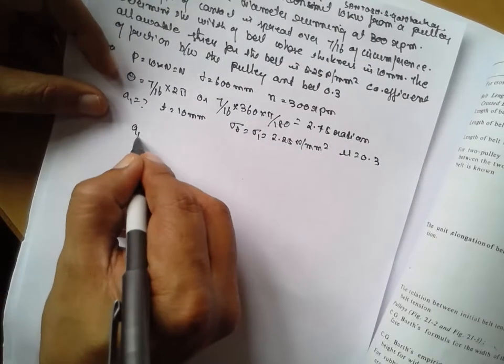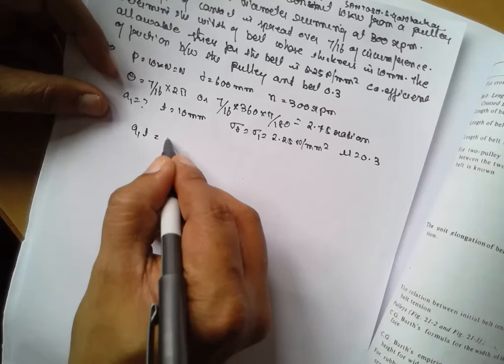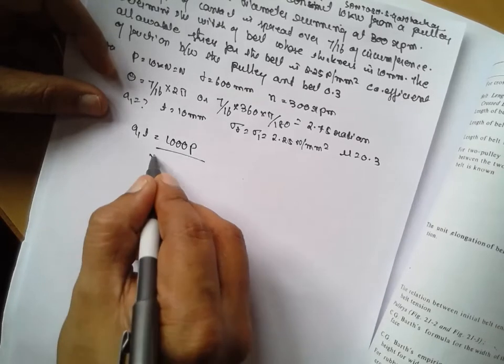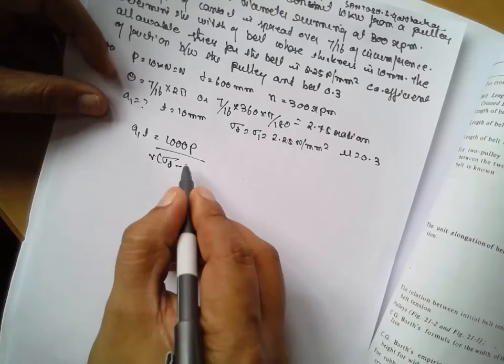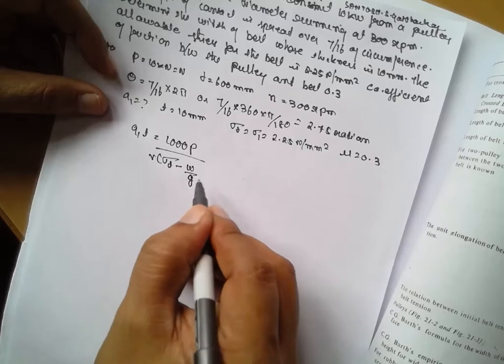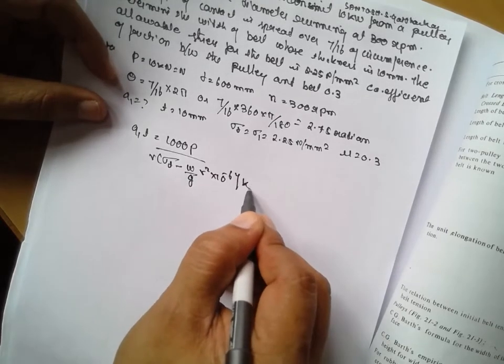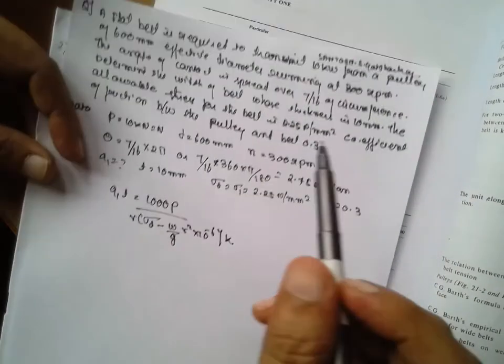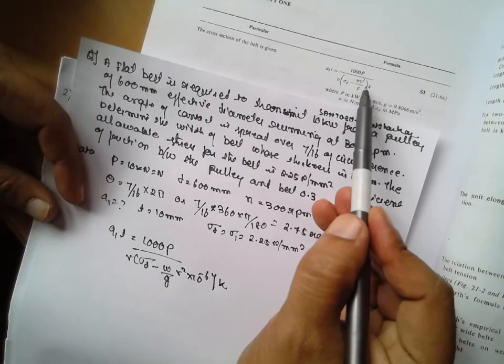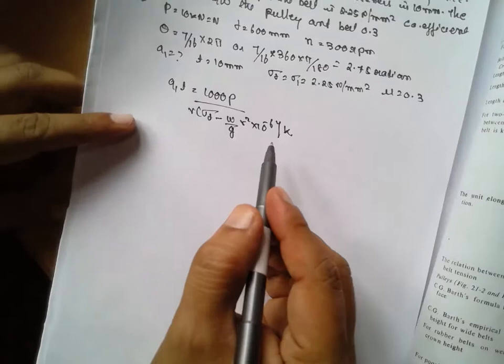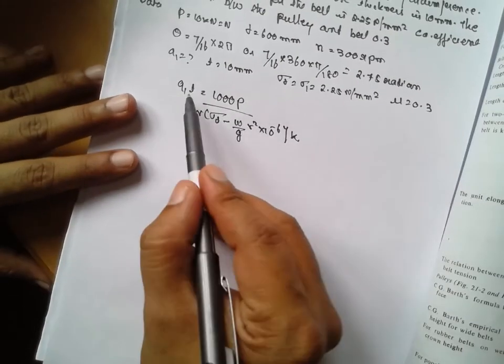The formula: A times t equals 1000 P divided by v times sigma d minus w by g times v square into 10 raised to minus 6 into k. You have to write this extra 10 raised to minus 6 here.